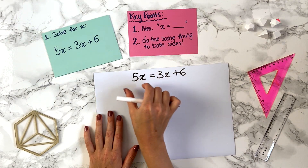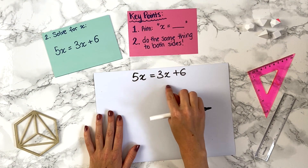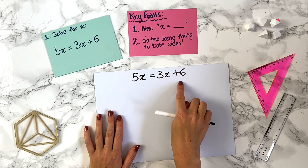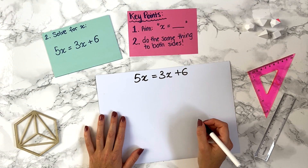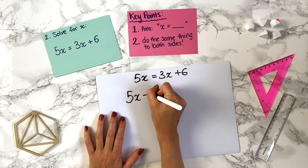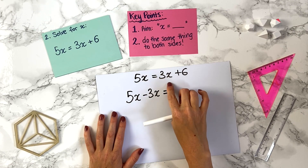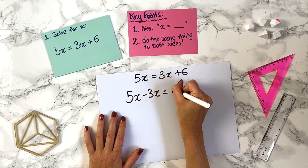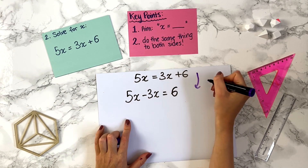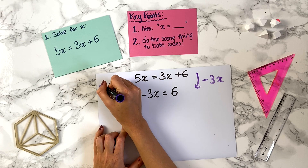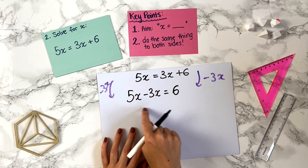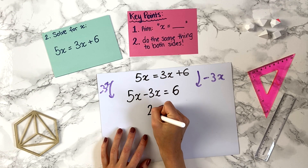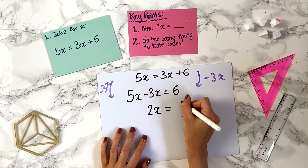We can minus 3x from the right-hand side to get rid of the x's there. So we minus 3x from both sides: 5x minus 3x on the left, and on the right, 3x minus 3x is zero, leaving just 6. Because both terms have a single x, we can combine them: 5x minus 3x is 2x. So we have 2x equals 6.